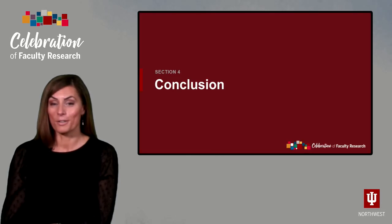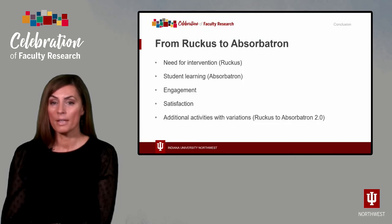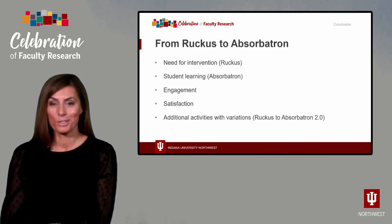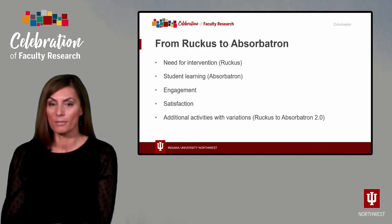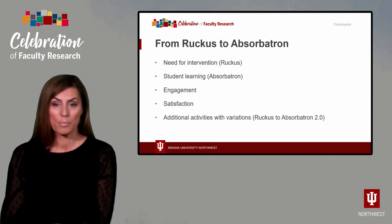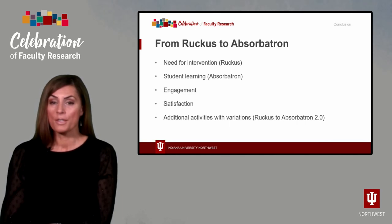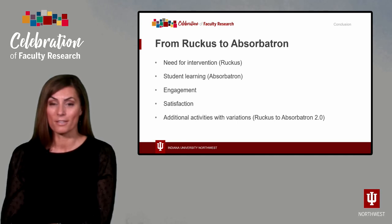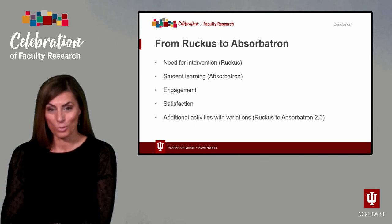That brings us to the last part of this presentation. It was clear that I needed to change my approach to teaching some of the more complex subjects in R102 — in other words, I needed to create some ruckus — which led to not only improved student engagement and satisfaction, but was also effective in improving student learning, or absorbitron. Finally, based on student feedback, additional activities have been implemented to help teach other complex topics in R202, which is a continuation of R102. These new activities are slightly different from the original ones, but a similar level of student engagement and satisfaction has been noted for those Ruckus to Absorbitron 2.0 activities — but that is a story for another time.